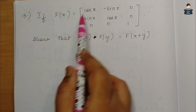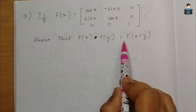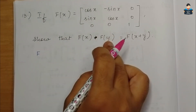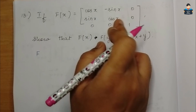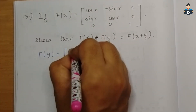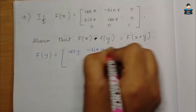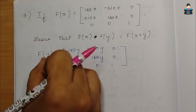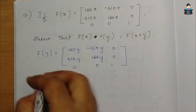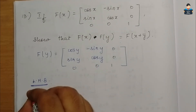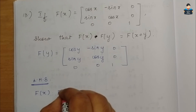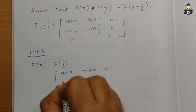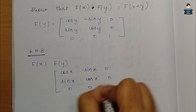Next, Question 13: if f(x) is a rotation matrix, we need to prove that f(x) into f(y) equals f(x+y). We write f(y) as the matrix [cos y, -sin y, 0; sin y, cos y, 0; 0, 0, 1], substituting y throughout.